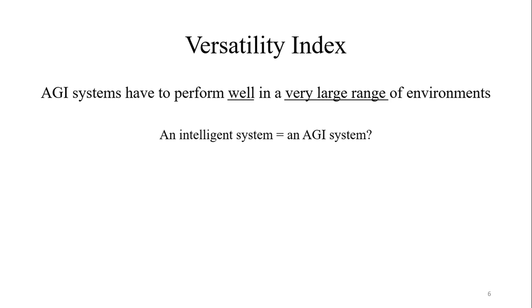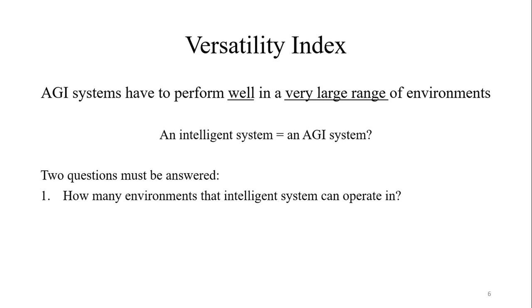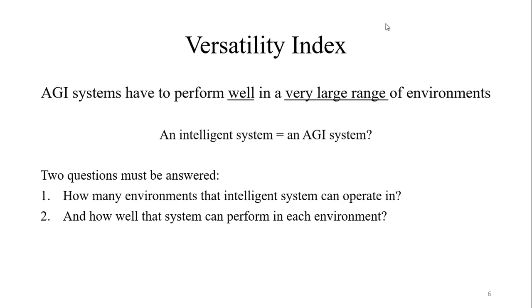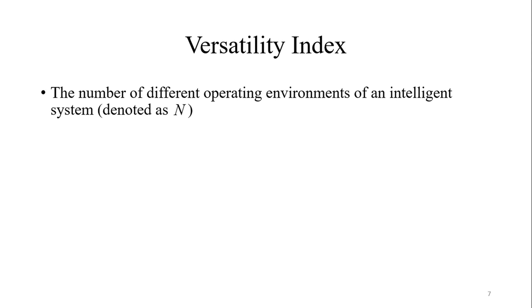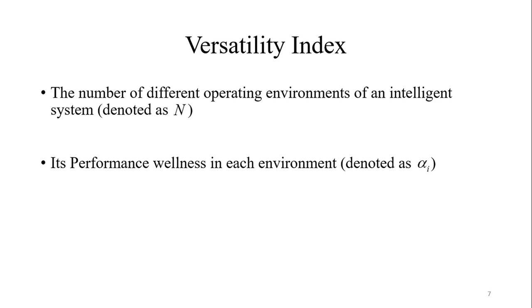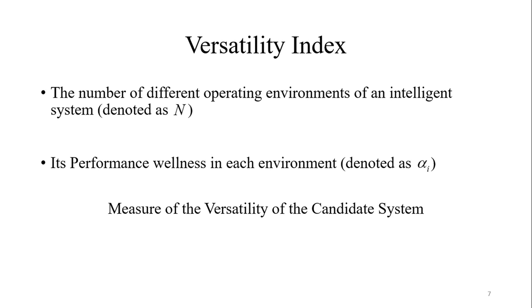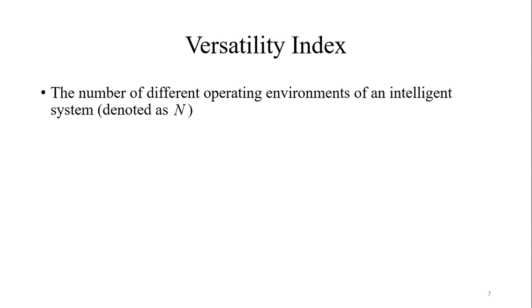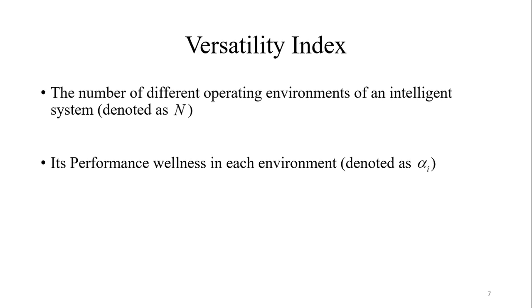Based on this statement, if you want to check whether an intelligent system is an AGI system, two questions must be answered. First, how many environments can an intelligent system operate in? Second, how well can that system perform in each environment? Therefore, the number of different operating environments of an intelligent system, denoted as N, in combination with its performance wellness in each environment, denoted as alpha_i, constitute the measure of the versatility of the candidate system. We call this measure the versatility index, or VI.